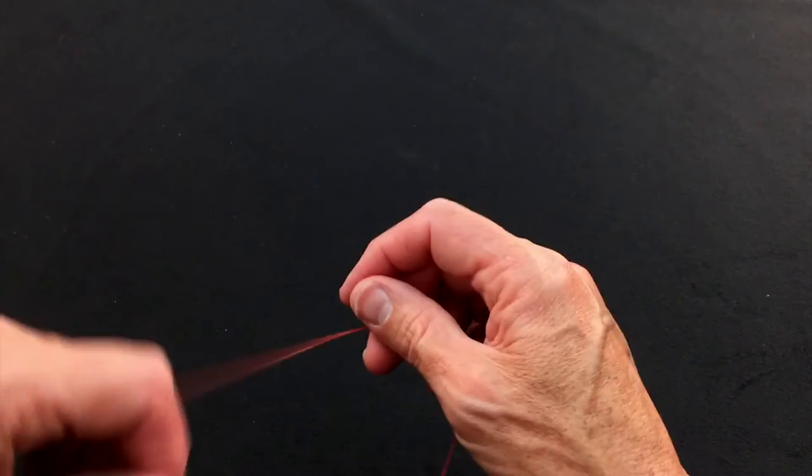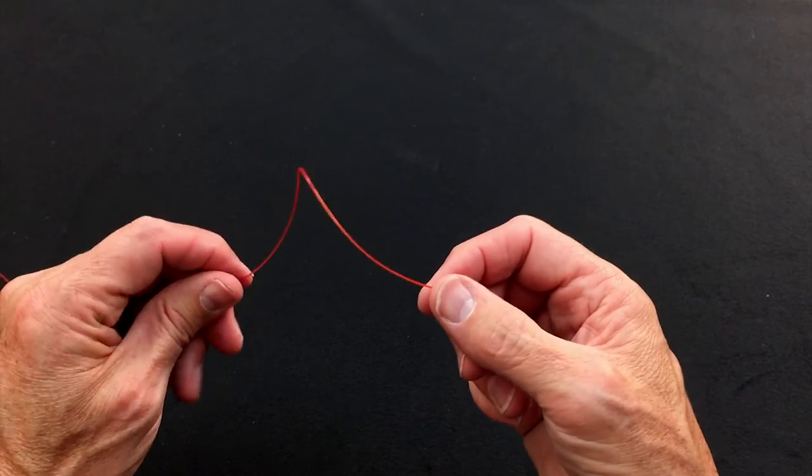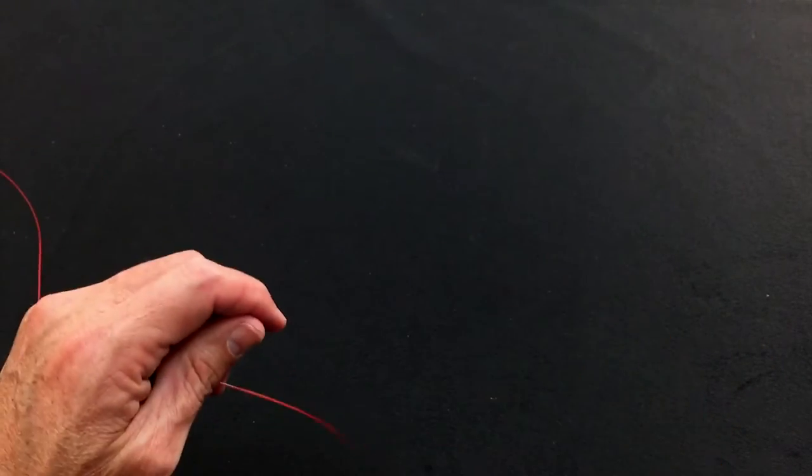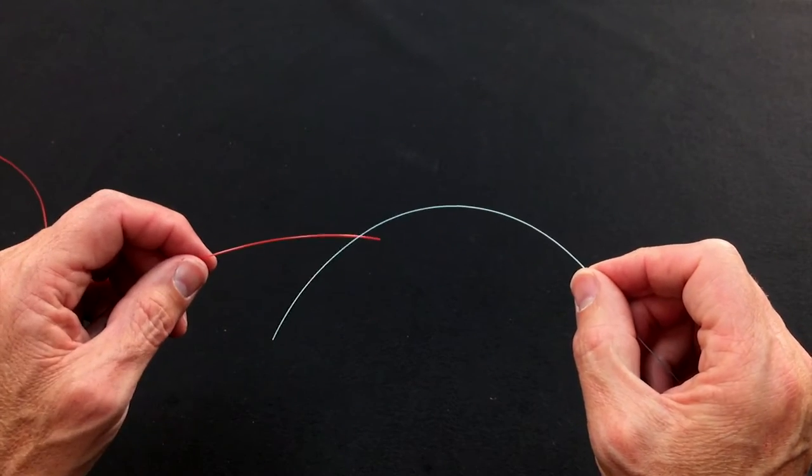So Slim Beauty, I'm going to demonstrate that in this red visible stuff. This is a 44-pound slick shooter and I'm going to attach 25-pound slick shooter to it, this thin blue stuff, so it's just easy to see.